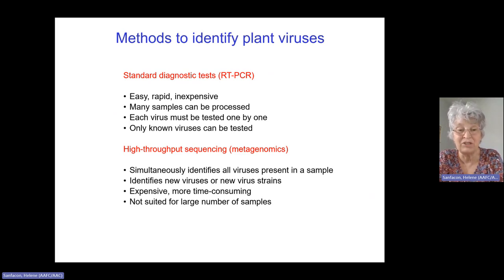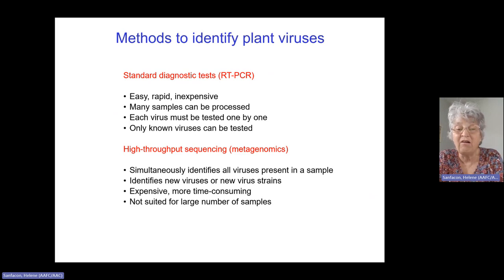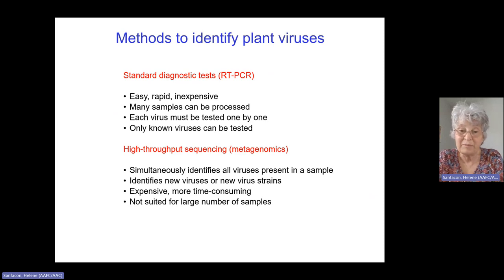You need to know enough of a virus's genome sequence to design the test. On the other hand, high-throughput sequencing, also referred to as next-generation sequencing or deep sequencing, allows us to simultaneously identify all viruses present in a sample. What's even better is that we don't need to know ahead of time what those viruses are — the method can identify new viruses or new virus strains. However, it is more expensive, more time consuming, and definitely not suited for a very large number of samples.